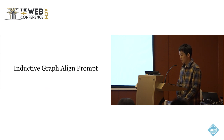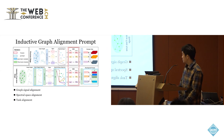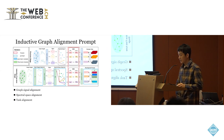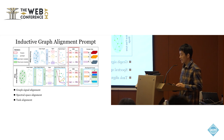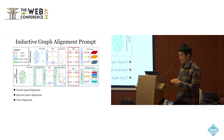Next, we will introduce our method named iGAP. Here is the model framework. It contains three parts: the first one is the graph signal alignment, the second one is the graph structure alignment, and the third one is the task alignment.